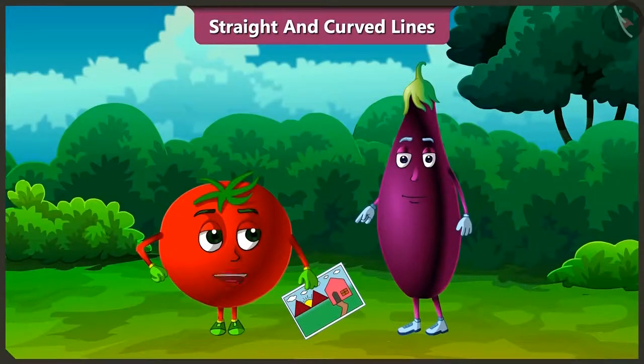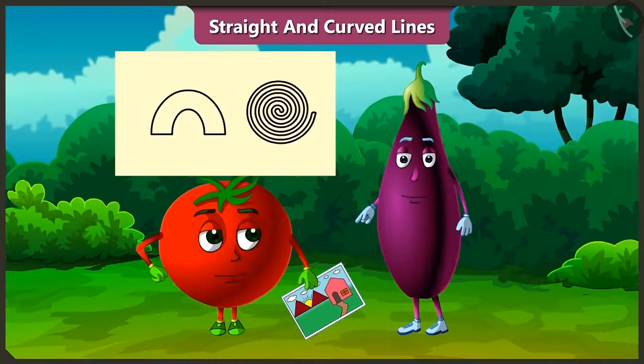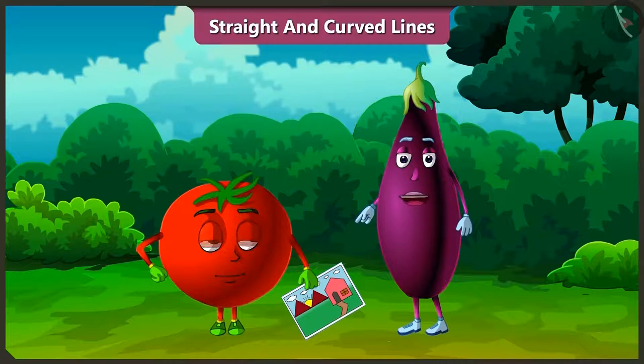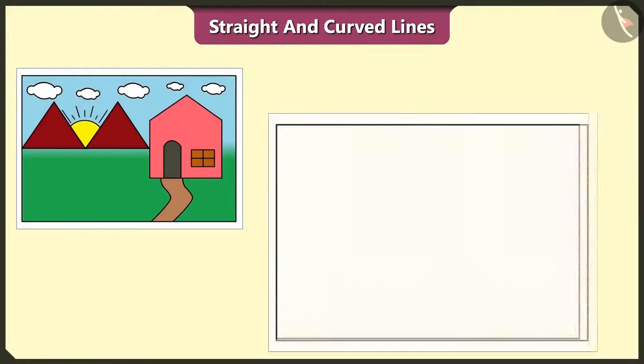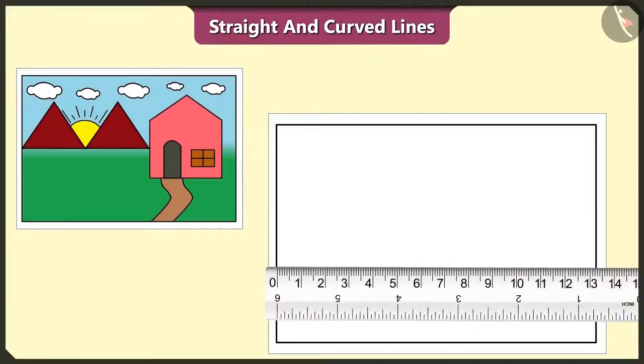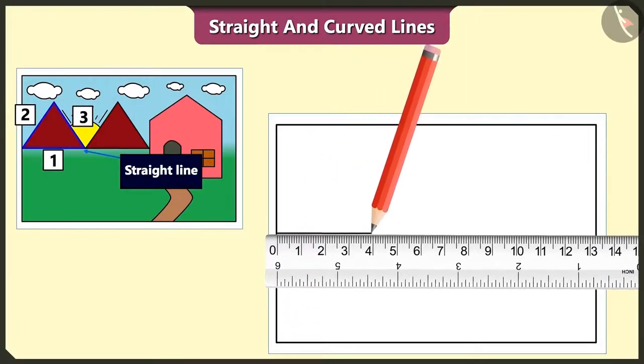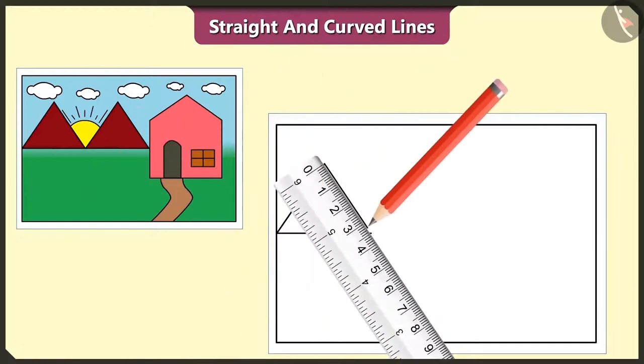Okay, so we have to draw this picture using straight and curved lines. Yes, so let's draw. First of all, let's draw a hill with the help of scale on paper. Yes, this hill is made of three straight lines.